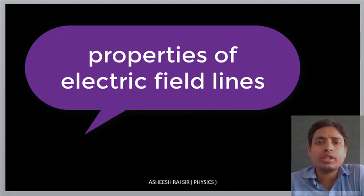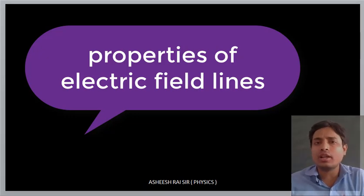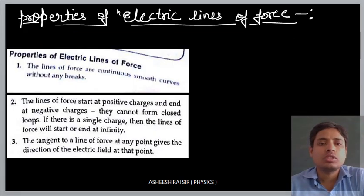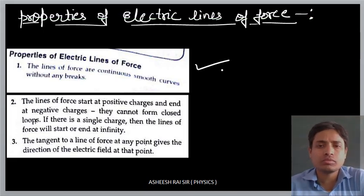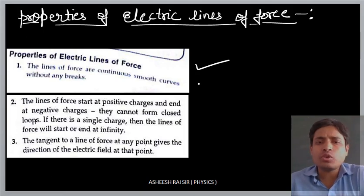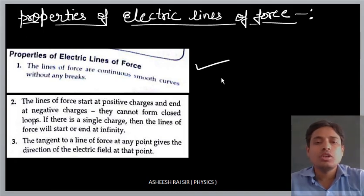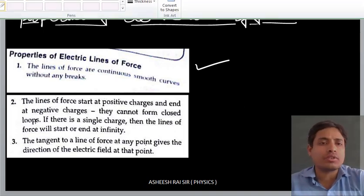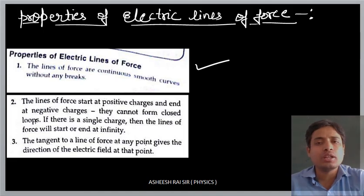Hello students, today we are going to learn about the properties of the electric field lines. The first property is that the line of force is a continuous smooth curve without any break. Electric field lines are always a continuous curve — they start from the positive charge and end at the negative charge, with no break in between the path.